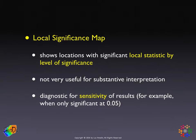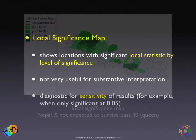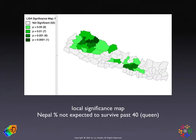The pseudo p-values' minimum is determined by the number of permutations — to get a pseudo p-value of 0.0001, you need 9,999 permutations. Here is an example using 75 districts in Nepal with a measure of life expectancy (the percentage of the population not expected to survive past age 40), using queen weights. The dark areas show that some clustering is going on in that particular area.